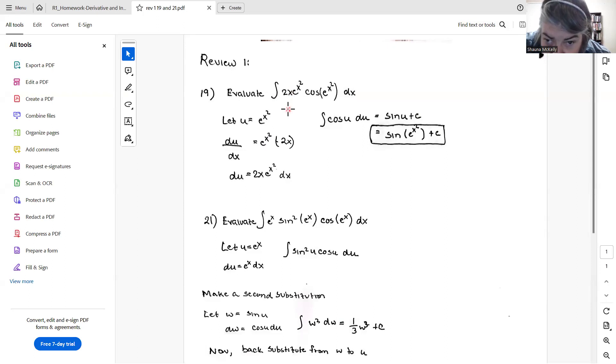Actually, some of you substituted for just the x-squared. And if you substitute for just the x-squared, then you end up with your du being 2x dx. So you end up with e^u cos(u) du. And e^u cos(u) du is not an integral that you know how to evaluate at this time. You will, by the end of next month, you'll know how to evaluate that.